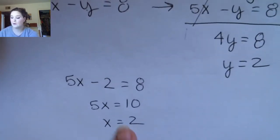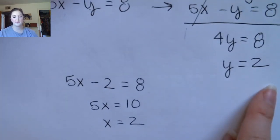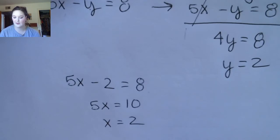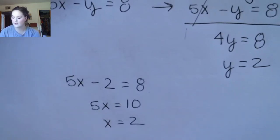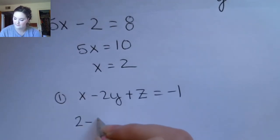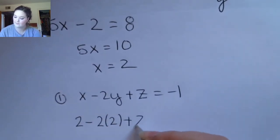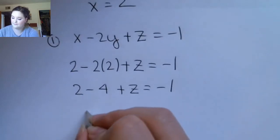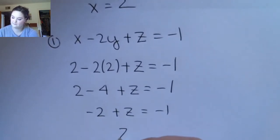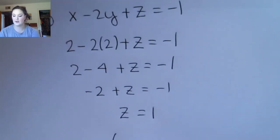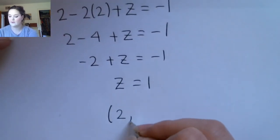Now I'm going to use these two values and plug them back into one of my original equations — I'll just do the first one: x minus 2y plus z equals negative 1. I put in my values for x and y, and I get z equals 1. So I'm going to write my answer as an ordered triple: x, y, z.